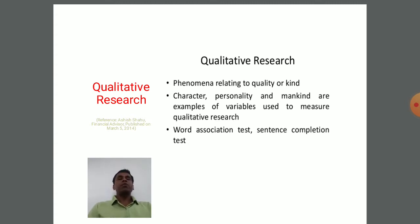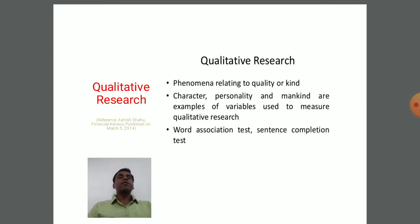In qualitative research we conduct research on different types of qualities of a human being or any other particular aspect. For example, with a human being, qualities can be character, personality, talent, how a person walks, how they talk — all of these can be discussed. Word association tests and sentence completion tests are also tools used, and research can be undertaken using such tests. This kind of research is called qualitative research.